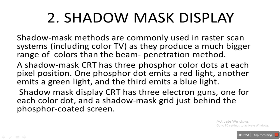A shadow mask CRT has three phosphor color dots at each pixel position: one dot emits red light, another emits green light, and the third emits blue light. The shadow mask CRT also has three electron guns, one for each color dot, and a shadow mask grid just behind the phosphor-coated screen. So there are three electron guns emitting RGB — red, green, and blue — and each pixel position has three corresponding color dots.